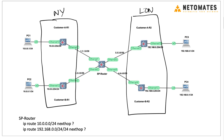The service provider network has underlying infrastructure to connect different cities. In this example we have one SP router — in reality there would be multiple routers, but I'm using a single router just to illustrate the VRF concept. Customers in each location connect their routers to the service provider router. On the New York side we have Customer A and Customer B routers, and the same on the London side.